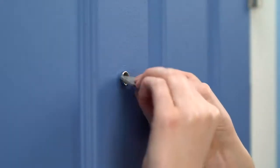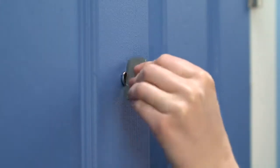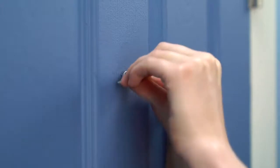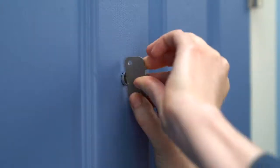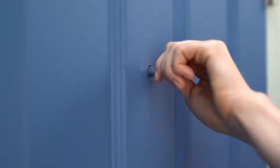Next, we'll use the peephole key to unscrew your peephole. Place the flat edge into the slots and rotate counterclockwise. Once it's loose, you can unscrew and remove it by hand.